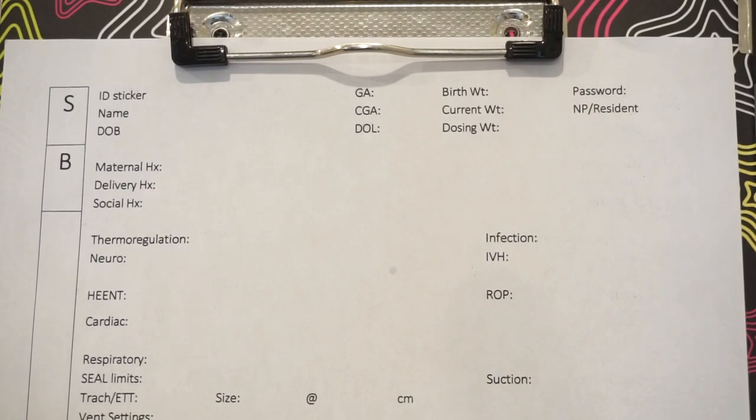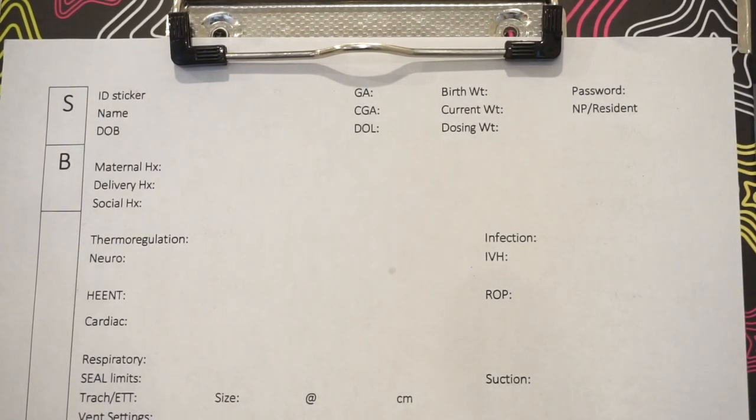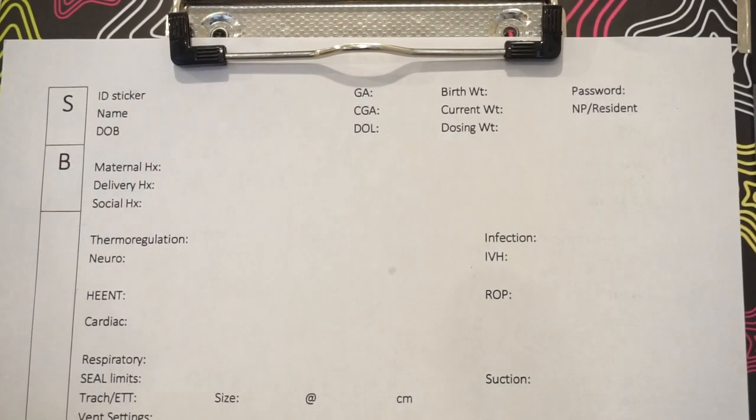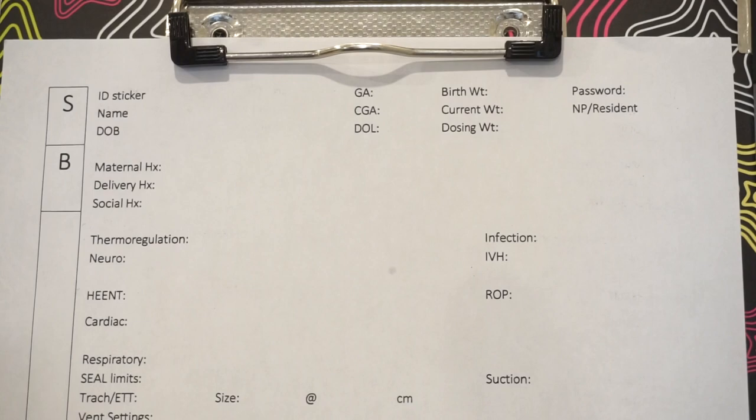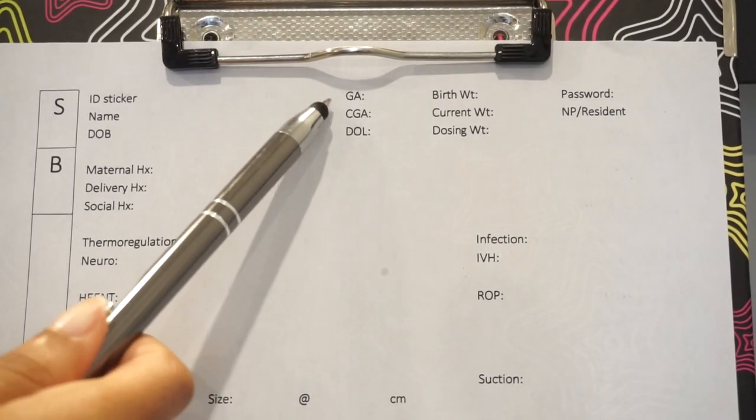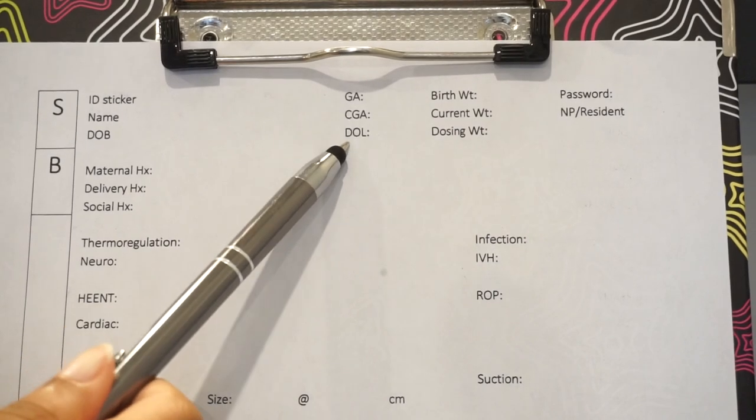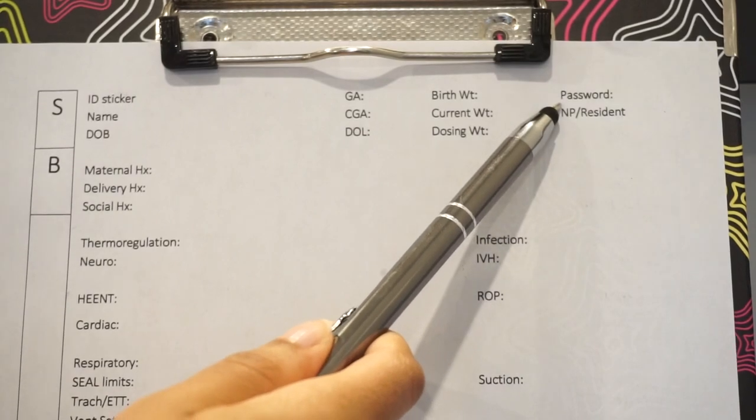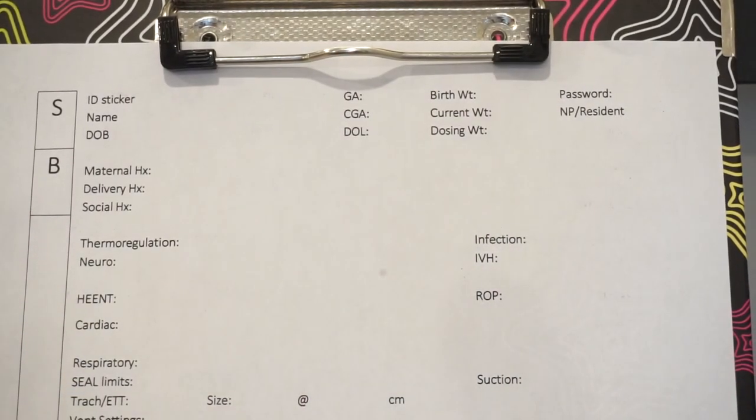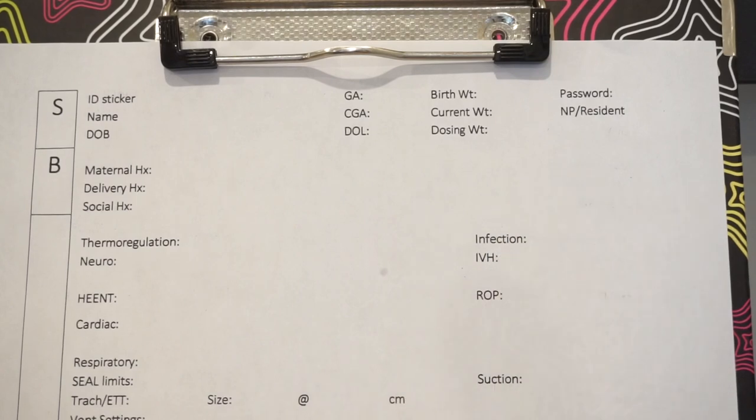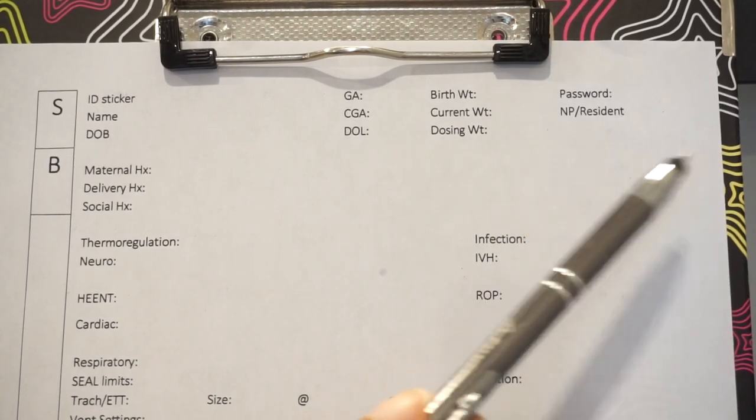So when you come in for work, you will usually go straight to your patient's chart and you will get a sticker. The sticker goes right here and it has the patient's last name, their MRN, CSN, and date of birth. And then over here is just gestational age, so how many weeks they were when they were born. And then we have their current gestational age, day of life, birth weight, current weight, dosing weight. Password is something that not all patients use. It's mostly for if a parent calls for an update, they will give a password first before you give them any information. NP/Resident is just so you know if the baby's provider is a resident or a nurse practitioner.